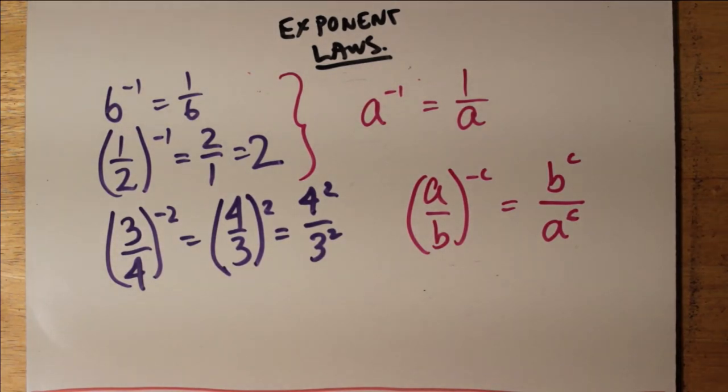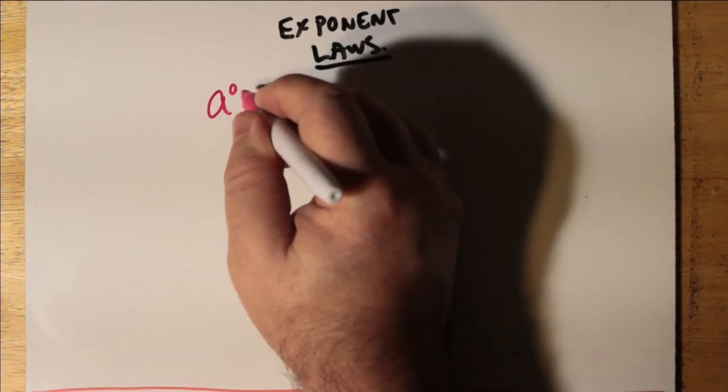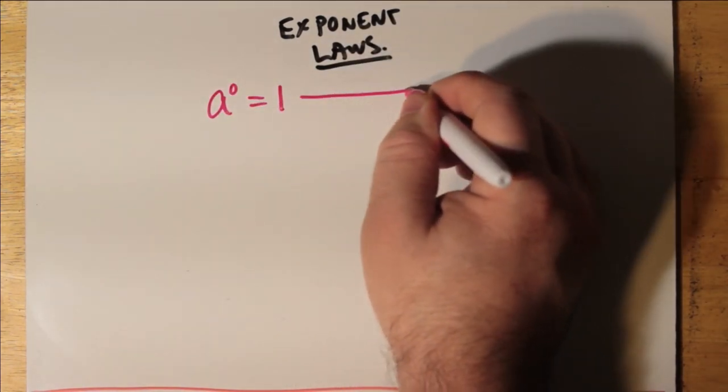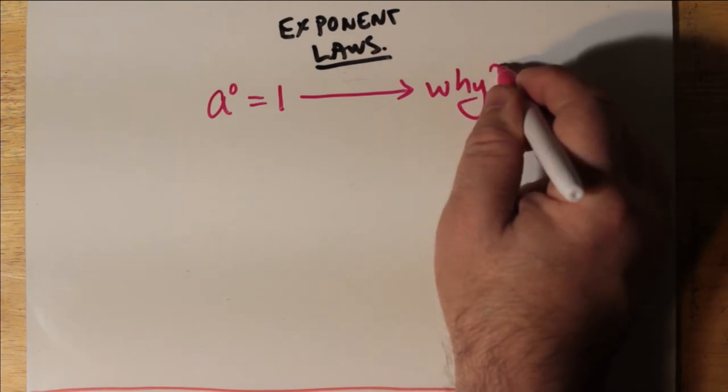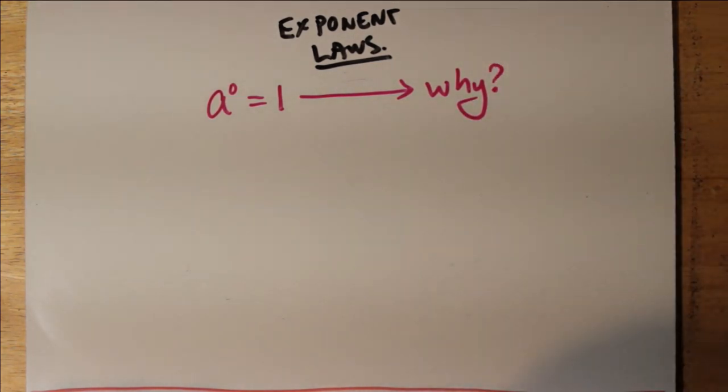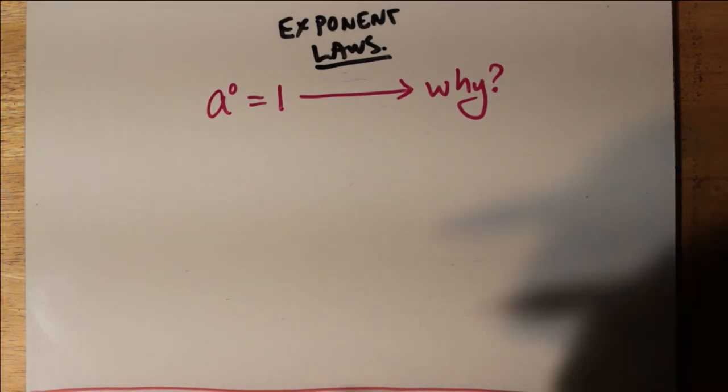Now what about a to the 0 equals 1? Why is that true? You might have heard about that in class, that a to the 0 is 1. Some number raised to the power of 0, as long as a isn't 0, is equal to 1. How come?